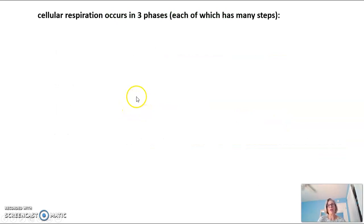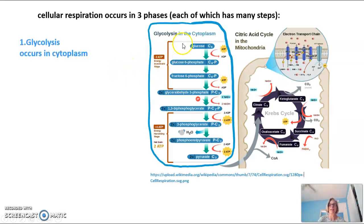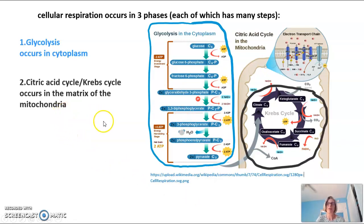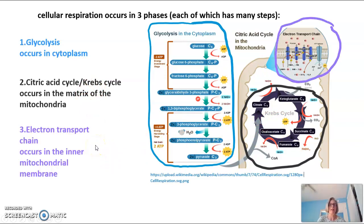Cellular respiration actually occurs in three phases, and each phase has many, many steps. The first phase is called glycolysis, and it occurs in the cytoplasm. The next process is called the citric acid cycle, or the Krebs cycle. It has two names because citric acid is one of the intermediates in the cycle; it's also called the Krebs cycle in honor of the person who deciphered every reaction in this process and was awarded the Nobel Prize. The citric acid or Krebs cycle occurs in the matrix, which is the innermost space of the mitochondria. The final phase is called the electron transport chain, sometimes also called chemiosmosis. It occurs in the inner mitochondrial membrane — the process is actually embedded in the membrane.